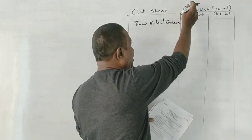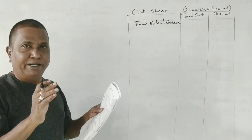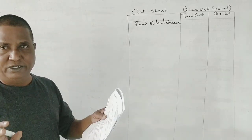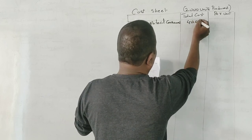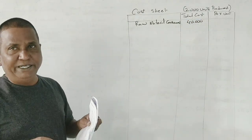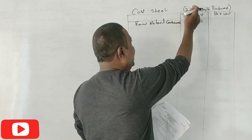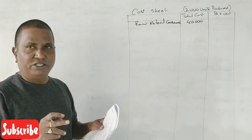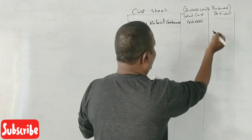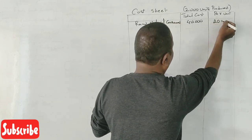To manufacture 2000 units, how much materials did you use? You used 40,000 rupees of materials. 40,000 materials you used for how many units to produce? 2000 units. Then what is the cost per unit? 20 rupees per unit.